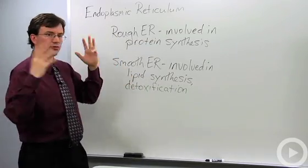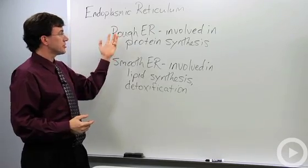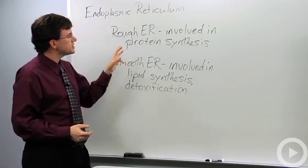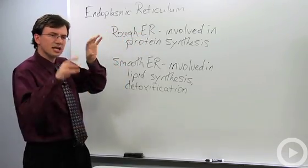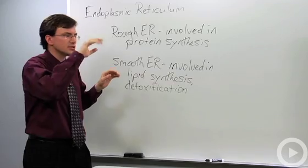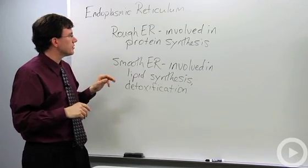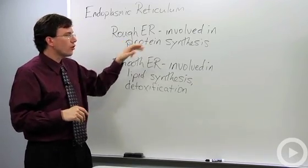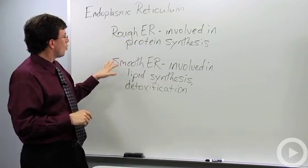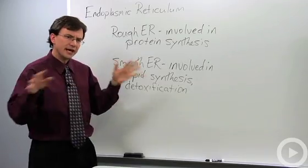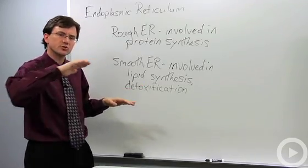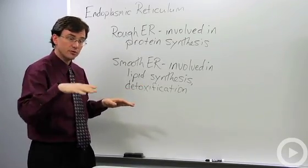There are two versions of the endoplasmic reticulum. The rough endoplasmic reticulum, which is named that because it's covered with ribosomes — little bumps on the surface — that are involved in protein synthesis. Whereas the smooth ER doesn't have any of those ribosomes, so its surface would be a lot smoother.